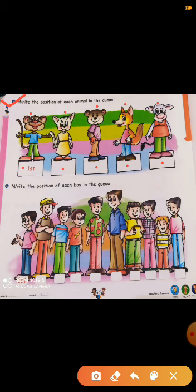Now, second, write the position of each boy in the queue. अब यहां हर boy की आपको position बतानी है, जो उनकी Q में खड़े हैं. जैसे 1st, 2nd, 3rd, 4th, 5th, 6th, 7th, 8th, 9th, 10th. यहां 10th तक complete आपको position note करनी है.